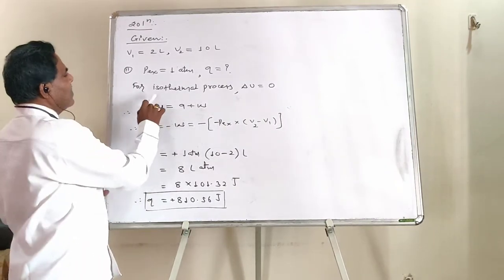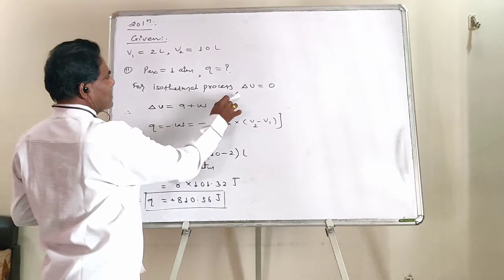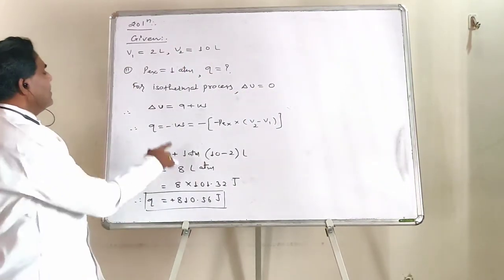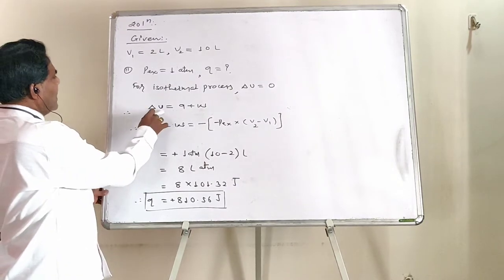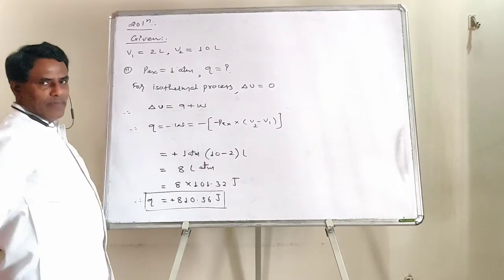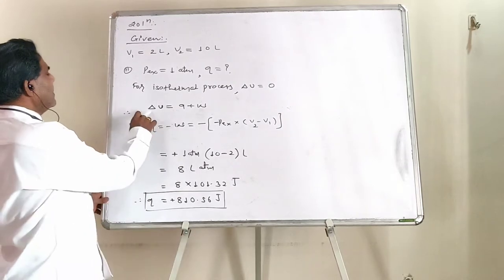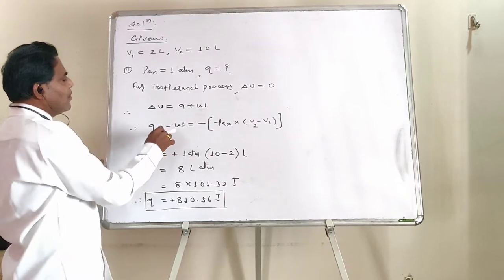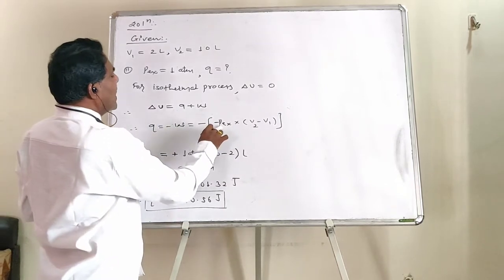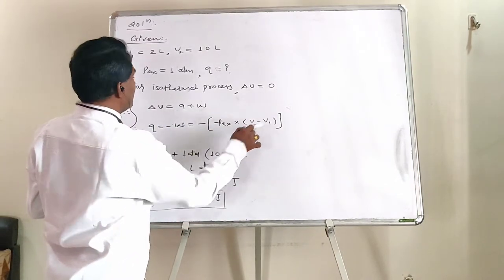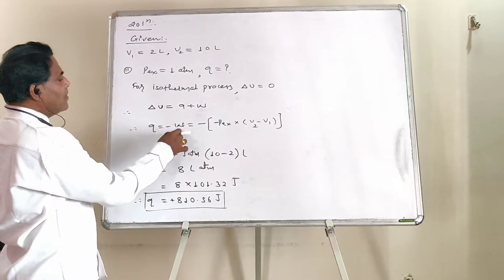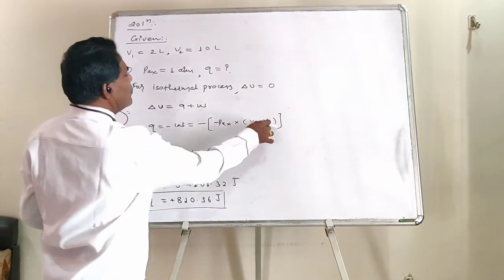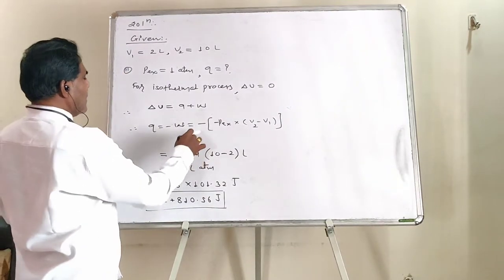Again we know, for an isothermal type of process, value of delta U, internal energy change, it is zero. According to first law, delta U equals to Q plus W. But delta U is equal to zero, so we can write Q equals to minus W, and we know W is equal to minus P external into V2 minus V1. Yahan minus W hai, or phir minus of minus P external into V2 minus V1.